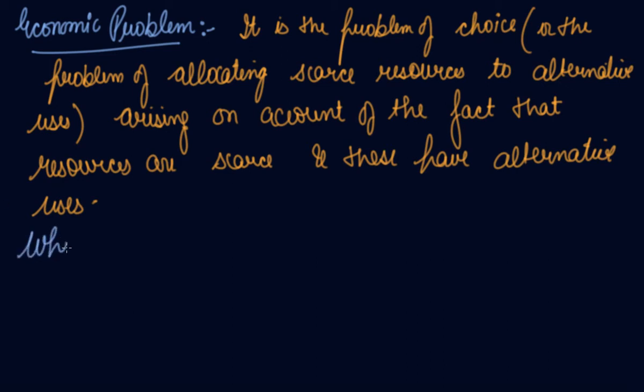Why does economic problem arise? There are three reasons. First, unlimited wants. We as humans have unlimited wants. Our wants can never be satisfied.